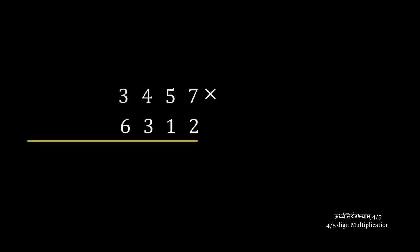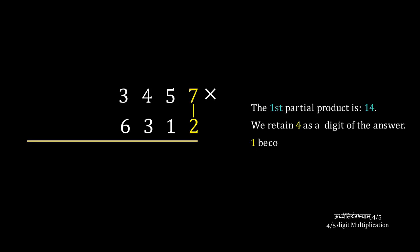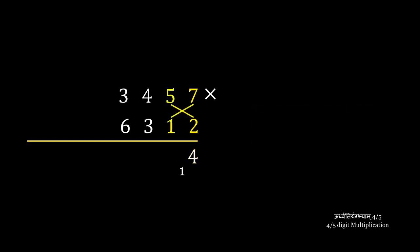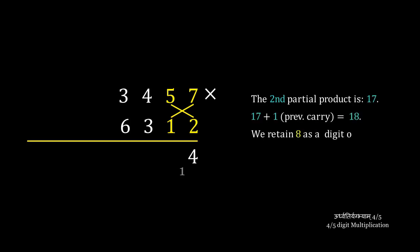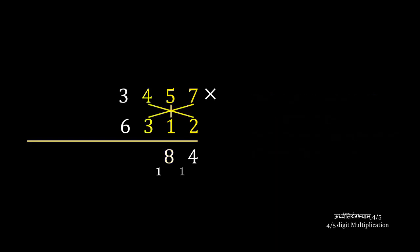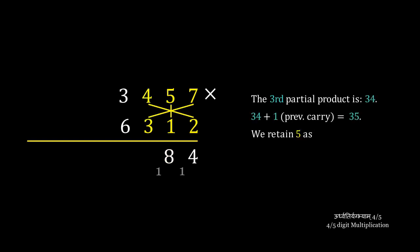Another example: 3457 times 6312. The first partial product is 7 times 2. We retain 4 as a digit of the answer and 1 becomes the next carry. The second partial product is 5 times 2 plus 7 times 1. We add the previous carry. We retain 8 as a digit of the answer and 1 becomes the next carry. The third partial product is a cross-multiplication of 3 digits — 34. We add the previous carry to get 35. We retain 5 as a digit of the answer and 3 becomes the next carry.